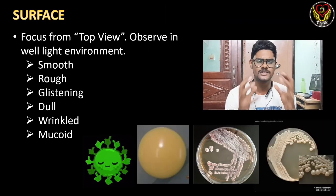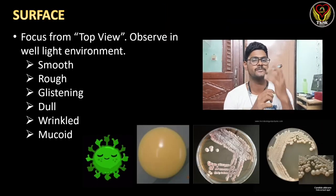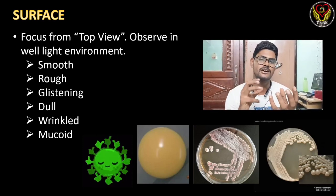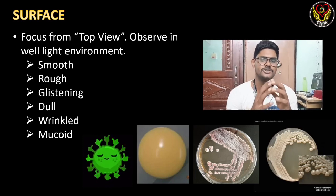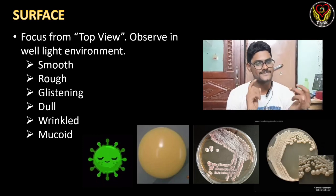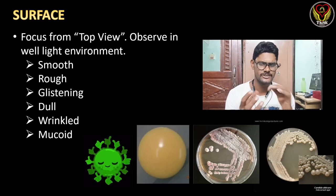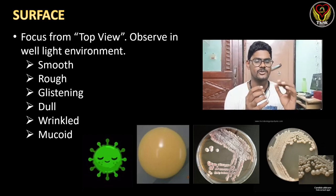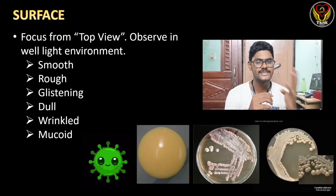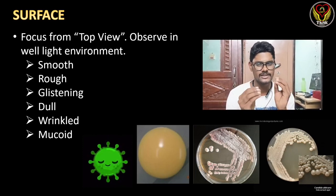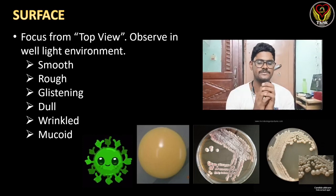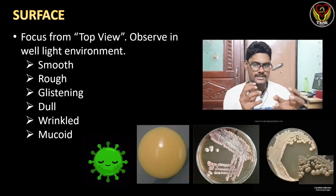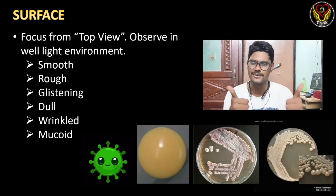Next is surface. To observe the surface of a colony, we focus from the top view in a well-lit environment so that light falling on the colonies reveals the surface clearly. The types are: smooth, rough (not reflecting light, very rough), glistening (shining a little), dull (dark color), wrinkled, and mucoid (having a mucus-like layer).